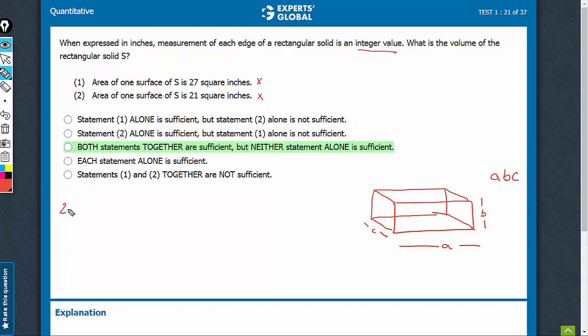27 means that there are two possibilities. It can be 9 into 3 or it can be 27 into 1. 21 again means there are two possibilities. It can be 7 into 3 or it can be 21 into 1. Remember, when you find the area of any side, if it is A into C, A and C are involved. If you find the area of this, then A and B are involved. One side is always going to be common. We have to choose a combination where one edge remains common.